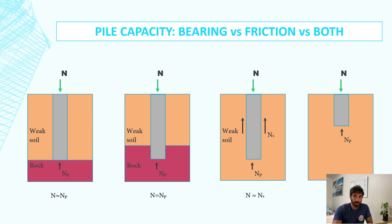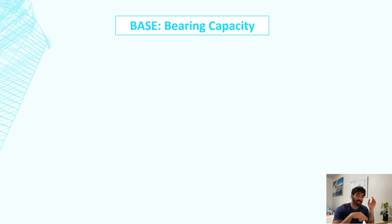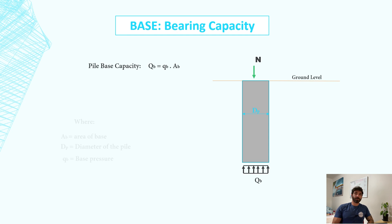For the calculations, the bearing capacity of the base is pretty straightforward. It is the bearing pressure times the area of the base. I won't get into the formulas to find the bearing pressure because as a structural engineer, I will assume the geotechnical engineer will give me this information, so I'll just get these values from the soil report.